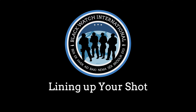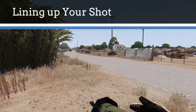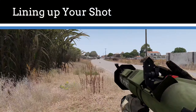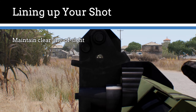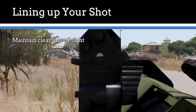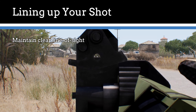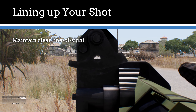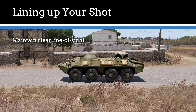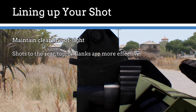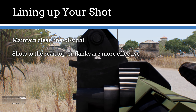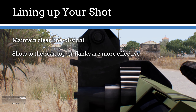Lining up your shot. When engaging an enemy armor asset, always make sure to have a clear direct line of sight to the target. Try to find a position where no trees, teammates, or other obstacles could potentially block your view of the threat. When possible, target the enemy armor's rear, top, or flanks. Armor tends to be weakest here and a successful shot to these areas is often more effective than a shot to the front.